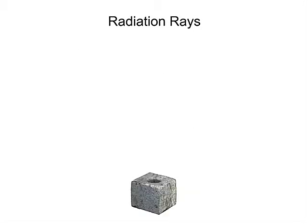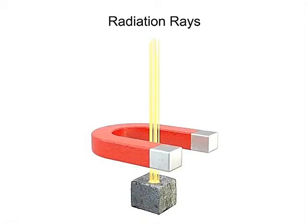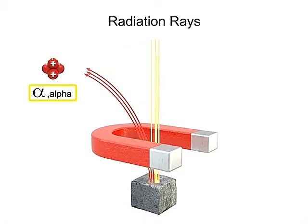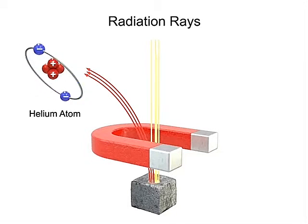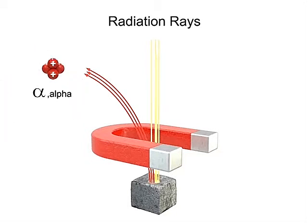Alpha rays carry particles originating from the nucleus of a radioactive atom. These particles consist of two protons and two neutrons. Essentially, they are positively charged helium atoms stripped of their electrons. The magnet causes these particles in the alpha ray to bend in one direction.